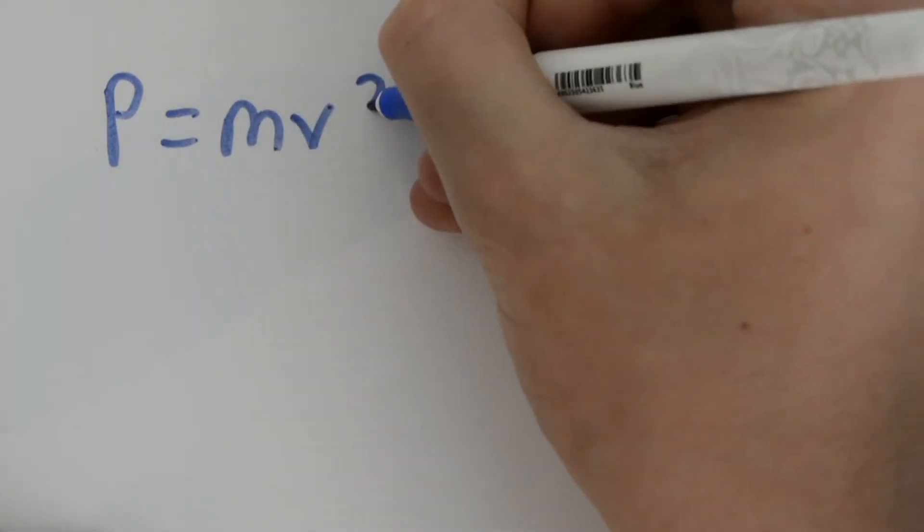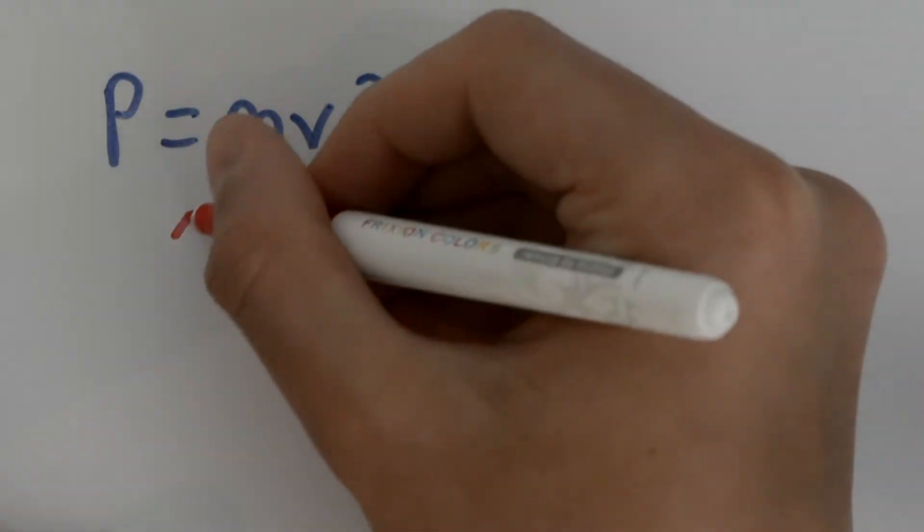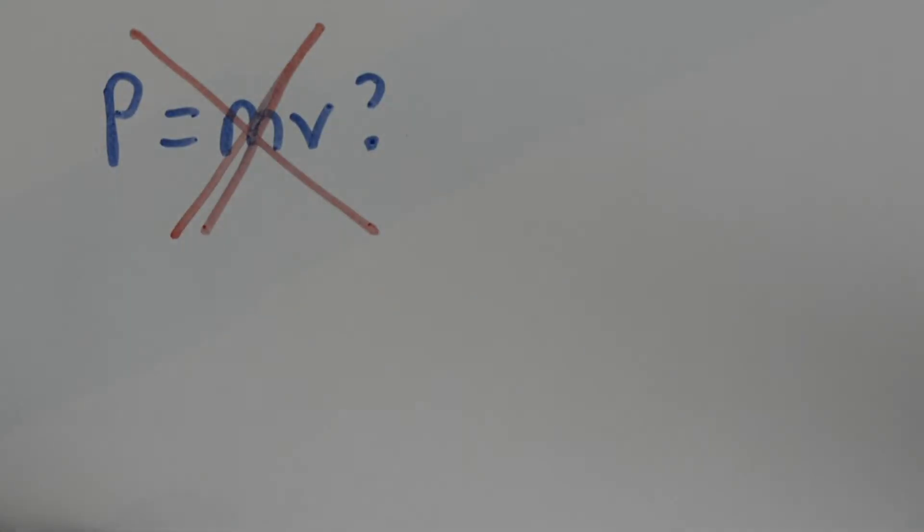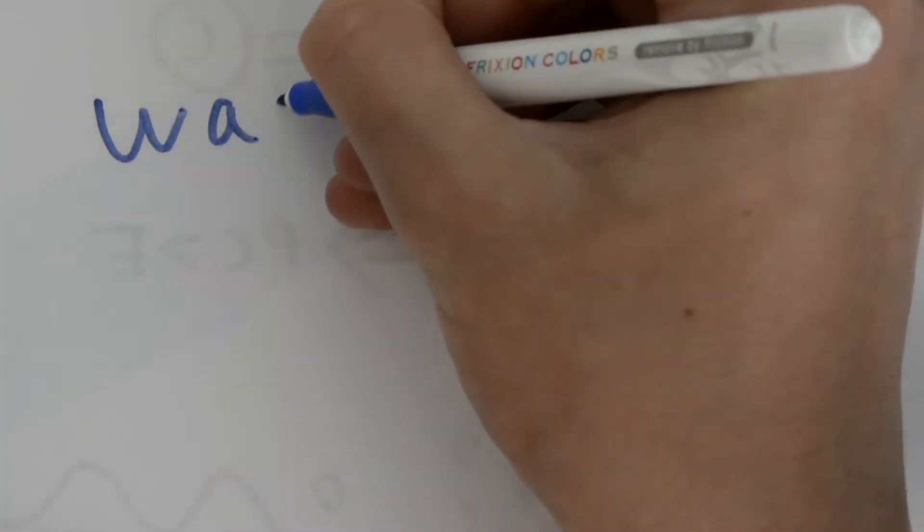That is why a photon, or anything without mass, is able to reach the speed of light while we can't. But for the keener eyes out there, you might be ready to type in the comments that momentum equals velocity times mass — so if a photon has no mass, surely it can't have any momentum or energy?